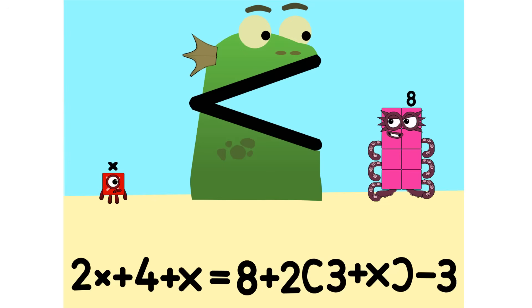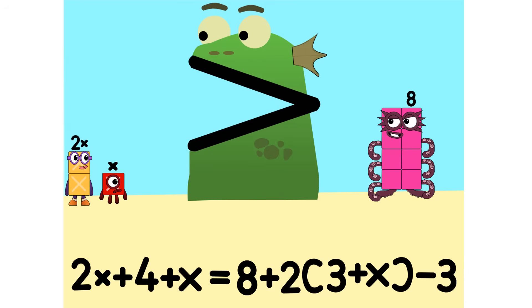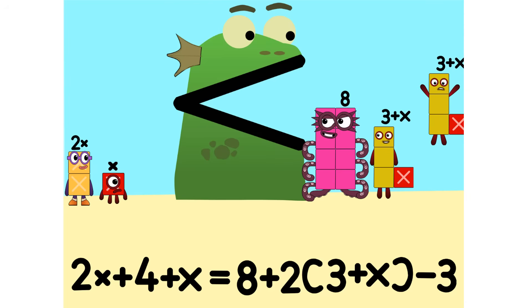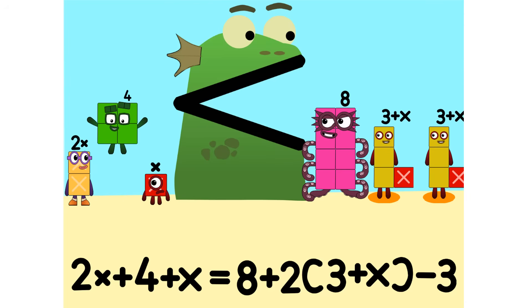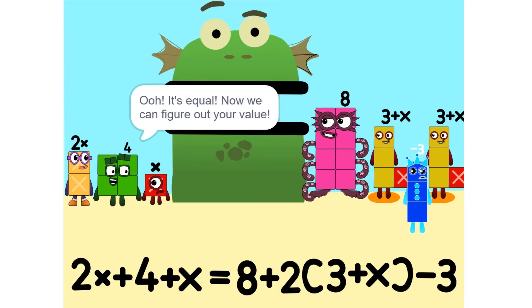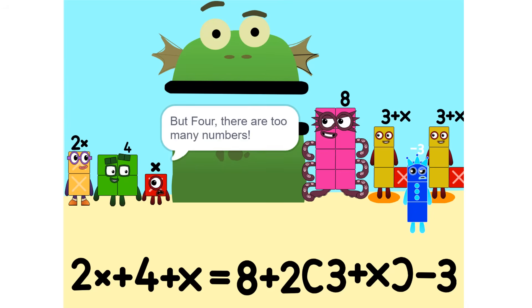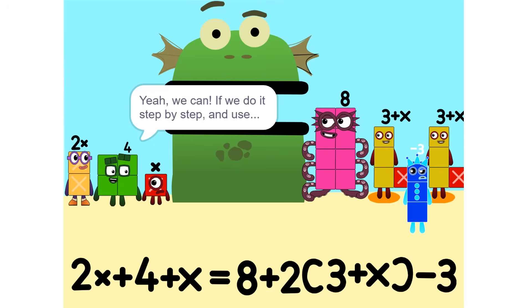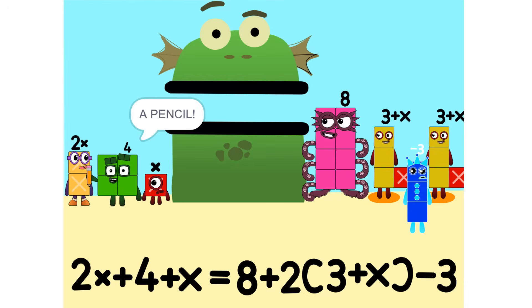So we add some more. 2 times X equals 2X. Nope. It's equal. Now we can figure out your value. But there are too many numbers. We'll never figure it out. Yeah, we can. If we do it step by step and use a pencil. So let's get started.